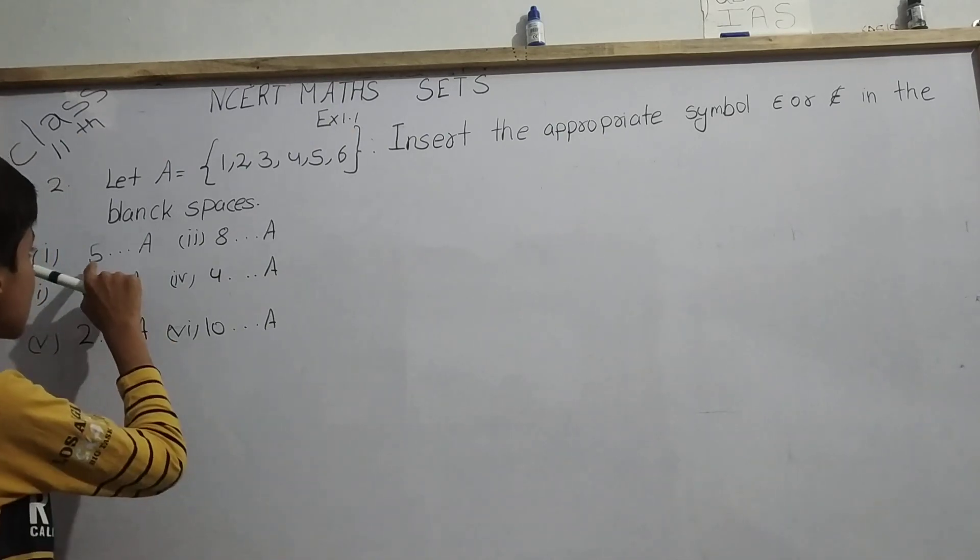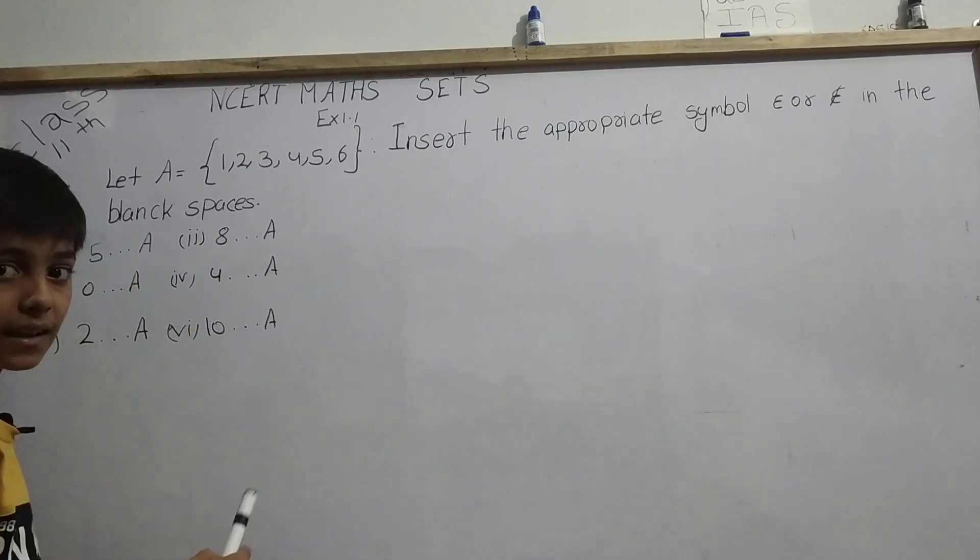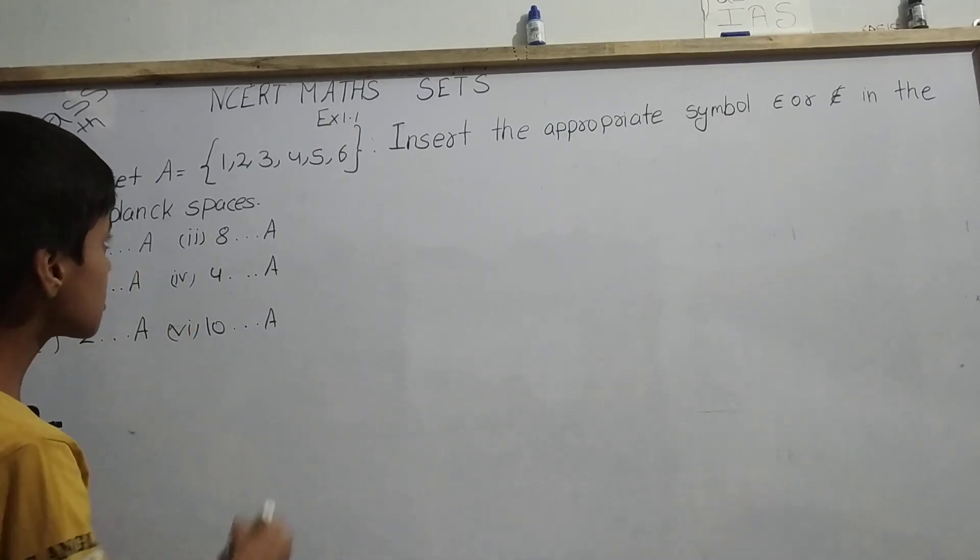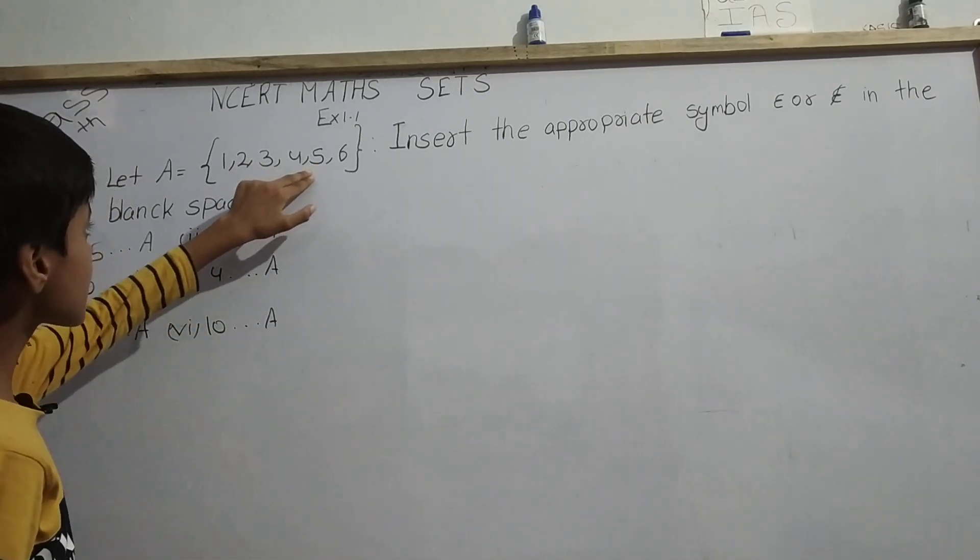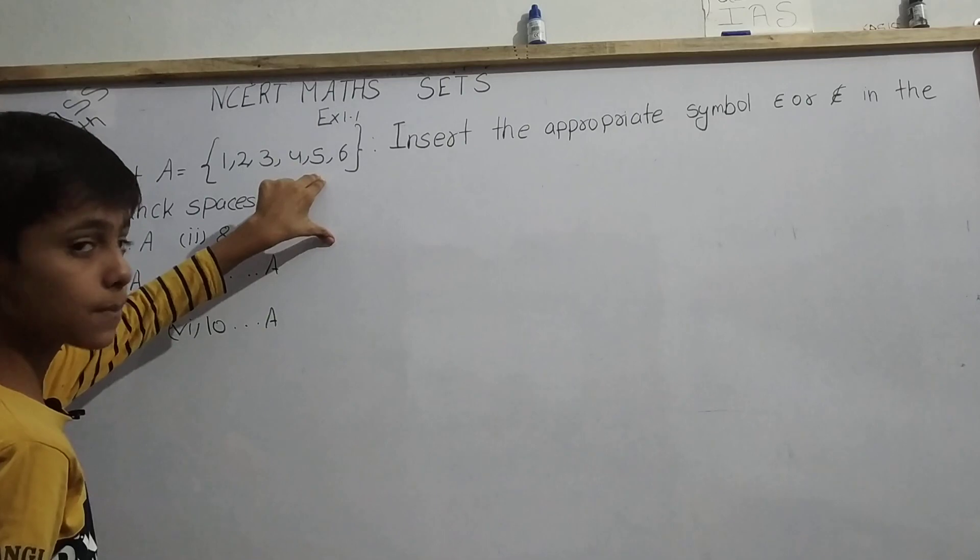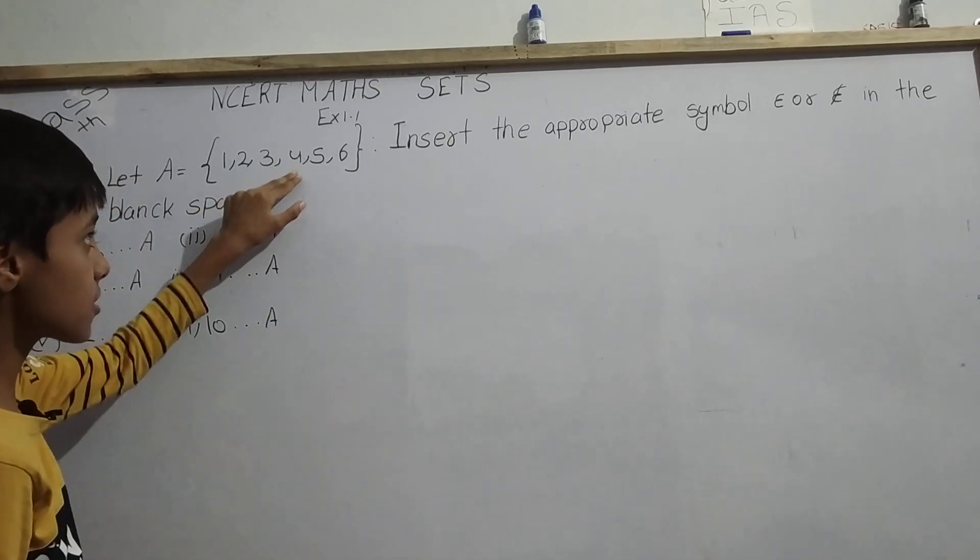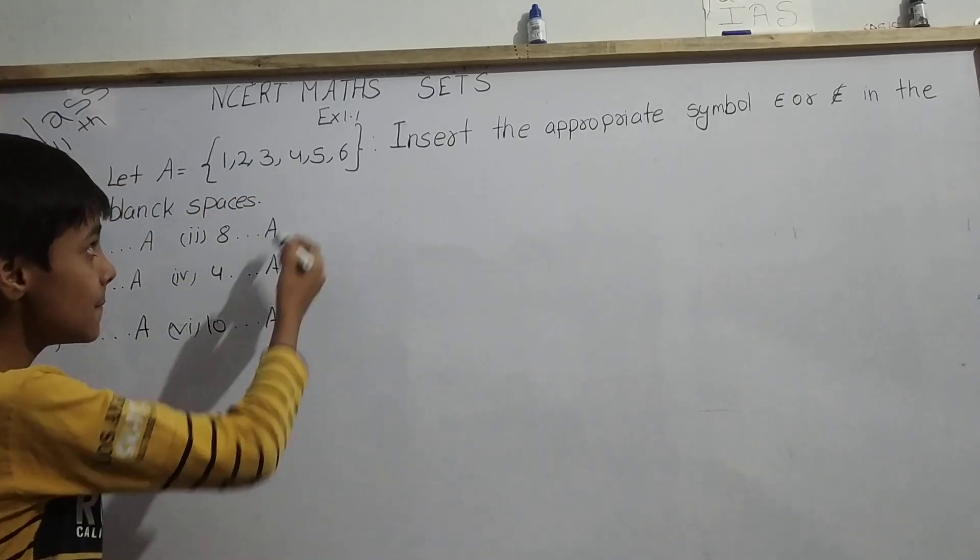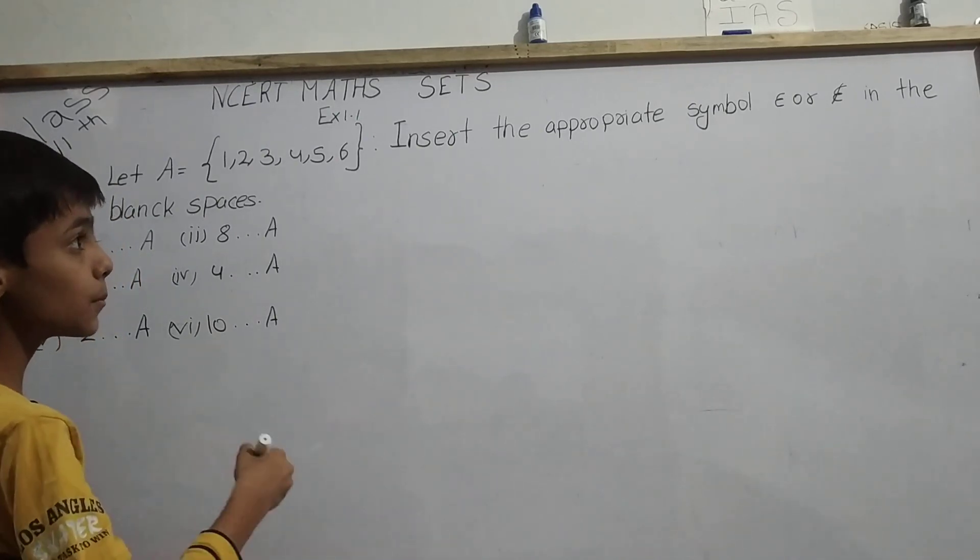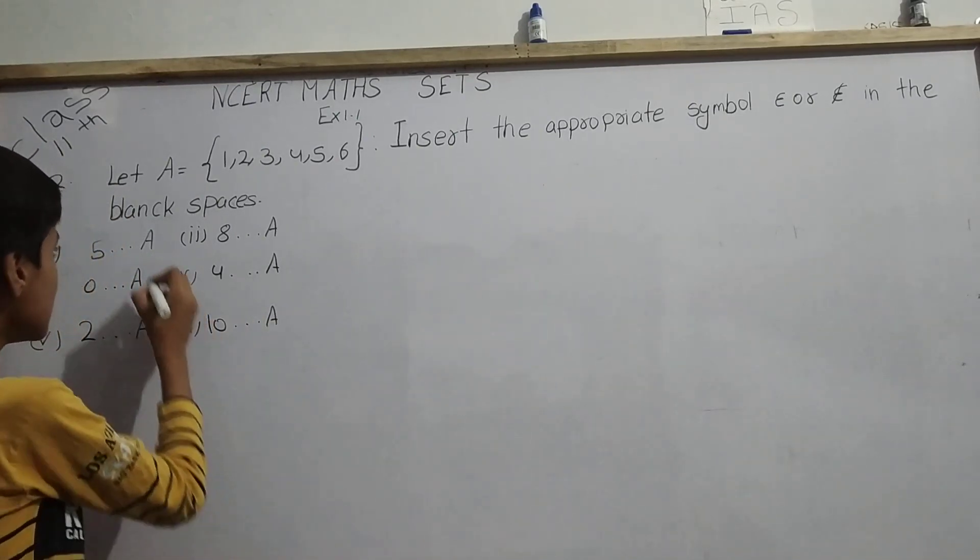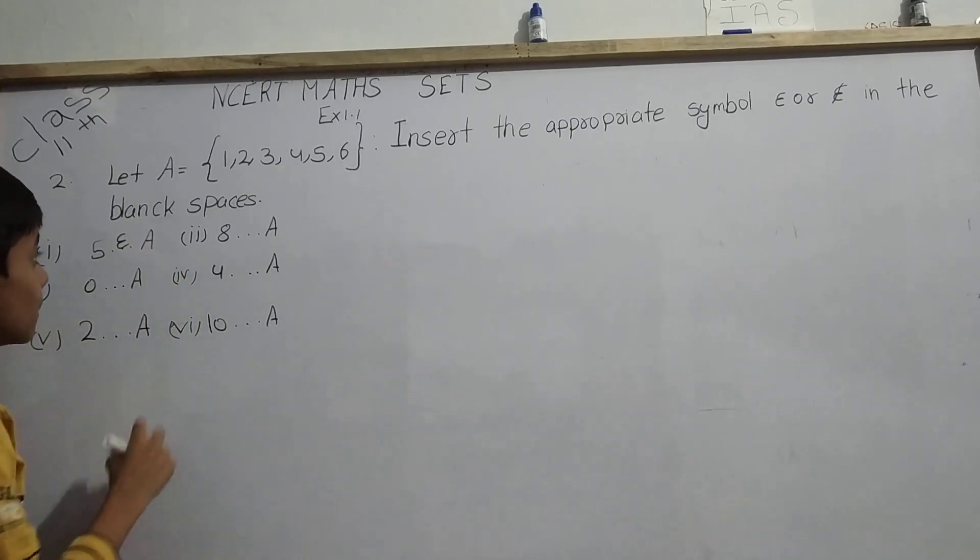So here it is asking whether 5 belongs to A or does not belong to A. We can check in this set that 5 is here. If 5 is present in this set, it means 5 belongs to this set, means 5 is an element of set A. So we will put the symbol epsilon, which means belongs to.